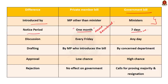The third difference is with respect to the discussion of the bills. A government bill can be introduced and discussed on any day. But a private member's bill can be introduced and discussed only on Fridays.